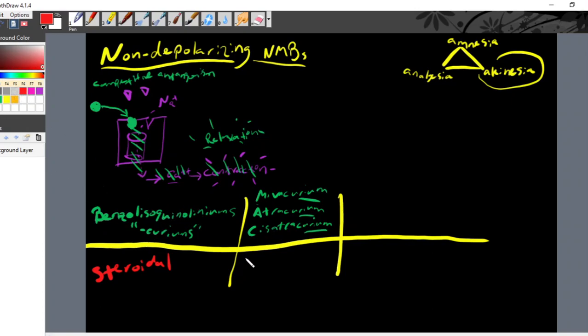The steroidal non-depolarizing neuromuscular blocking agents are going to end in oniums. You've heard of these probably more commonly. These are your rocuroniums, which is probably the most common one if you've heard of a neuromuscular blocking agent, it was probably rocuronium. Vecuronium and pancuronium. So they'll end in oniums.